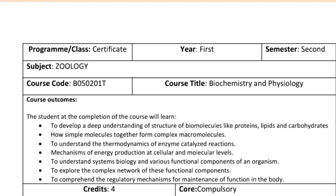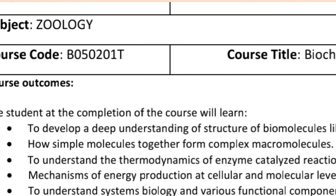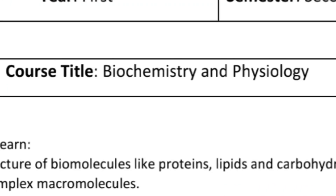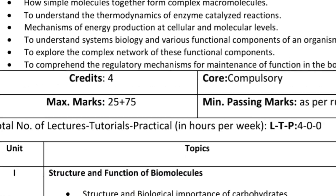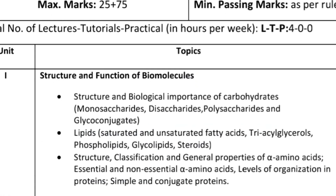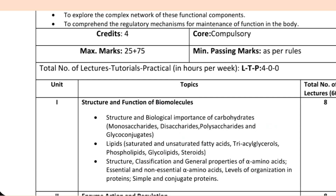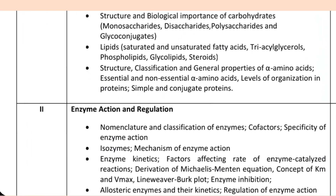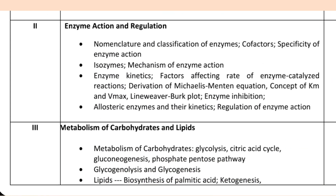This is the syllabus of BSc First Year, Second Semester Geology, whose course code is B050201T and course title is Biochemistry and Physiology. The first unit is Structure and Function of Biomolecules, and the second unit is Enzyme Action and Regulation.